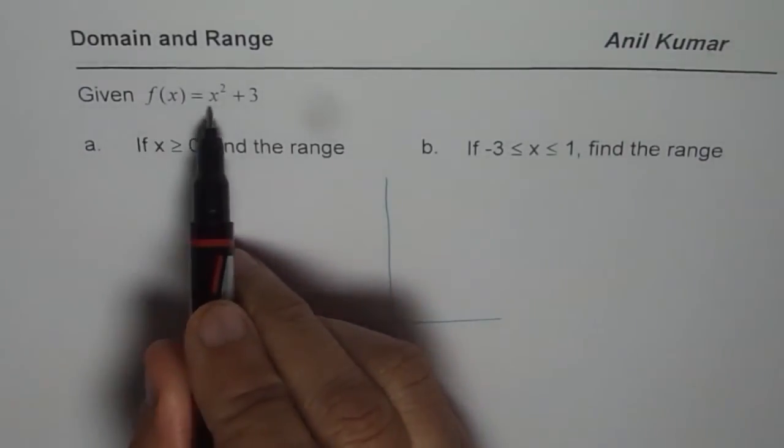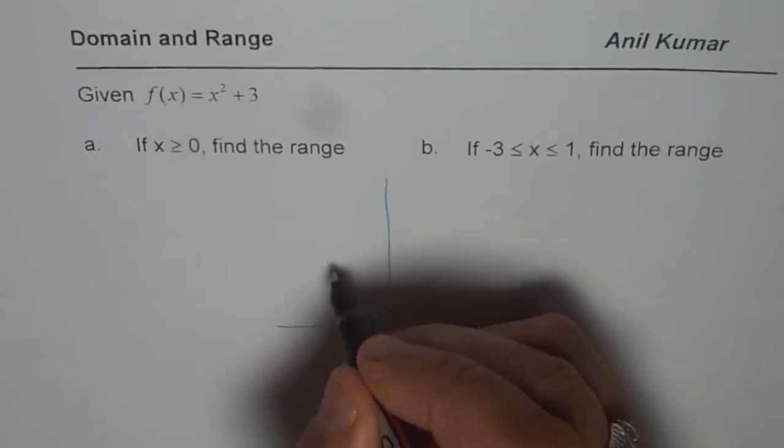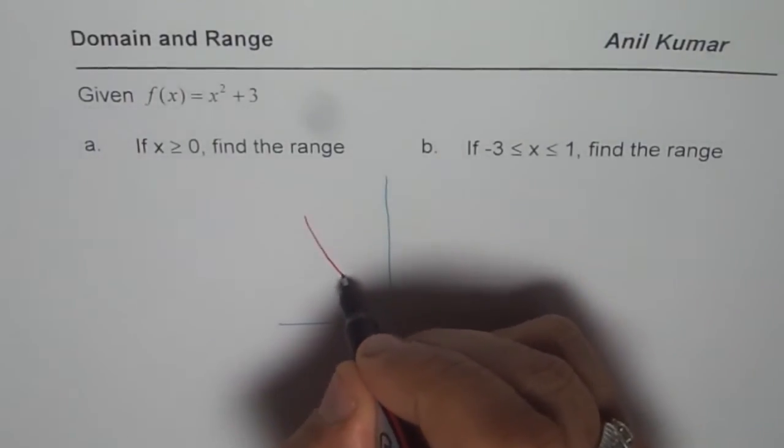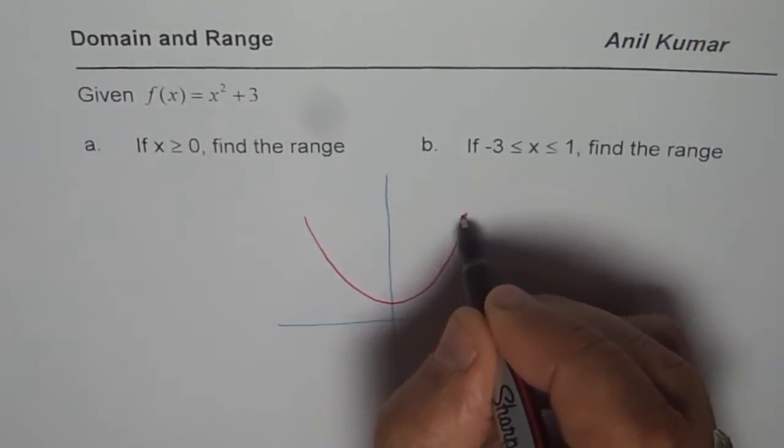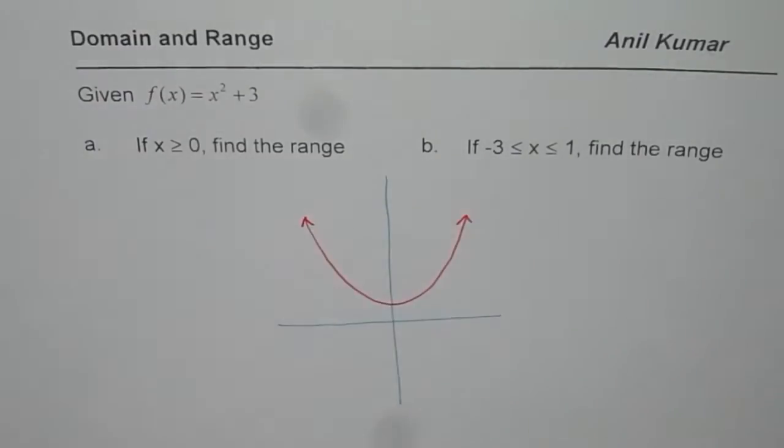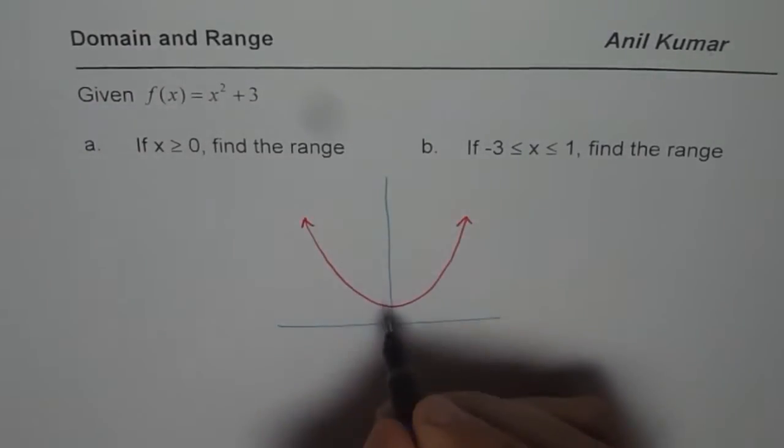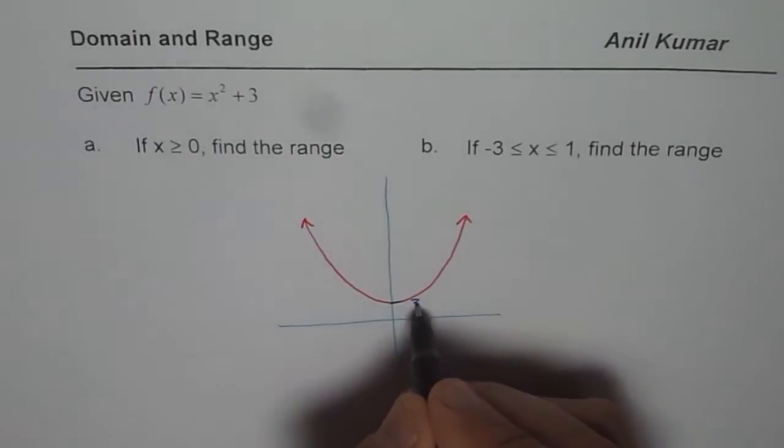We have f of x as x square plus 3. So I just draw a rough sketch of a graph. So let us say this is the graph of our function. Where if x is 0, then the value is 3. So this is 3 for us.